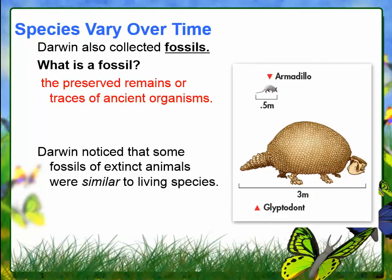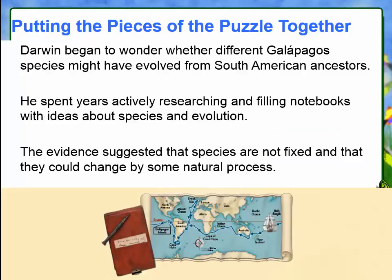As far as species varying over time, this evidence came from fossils. Darwin noticed that some of the fossils he found were very similar to animals living in his time. A fossil is the preserved remains or traces of an ancient organism — it may be remains of the organism itself or even a fossil of their footprint. He spent years actively researching and filling his notebooks with ideas about species and evolution, and other evidence suggested species did change through some type of natural process.